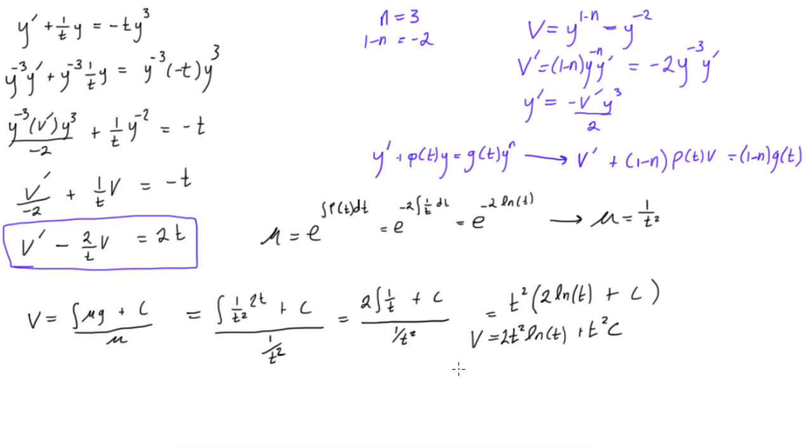That's the same thing as saying that y to the minus 2 is equal to all this stuff. 2t squared, ln of t plus t squared c. And this is the same, if you see y to the power of minus 2, that's the same thing as 1 over y squared. I guess we forgot to put that 2 there.